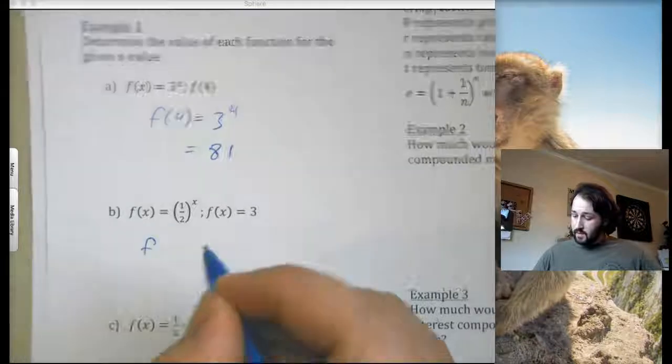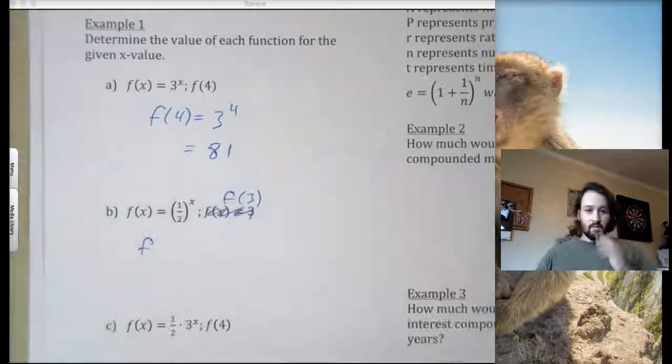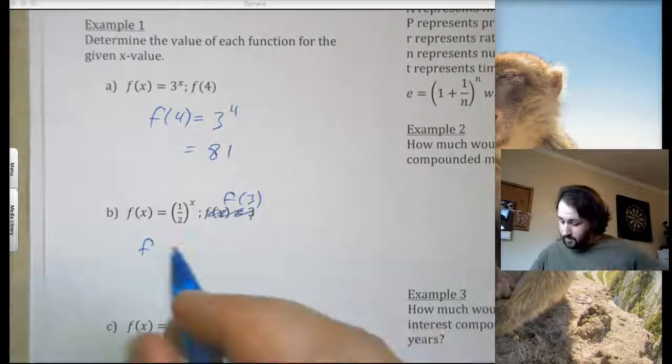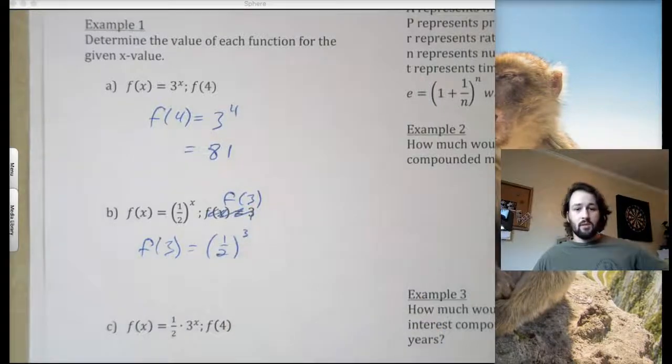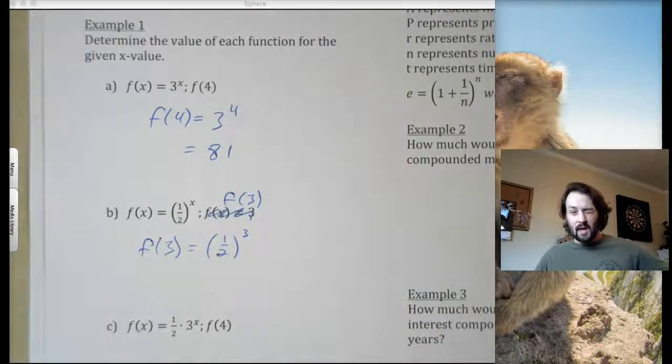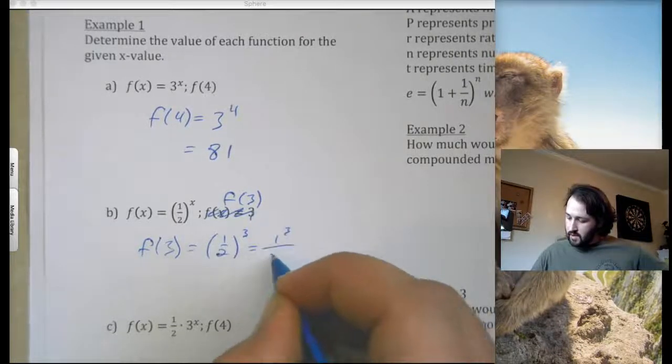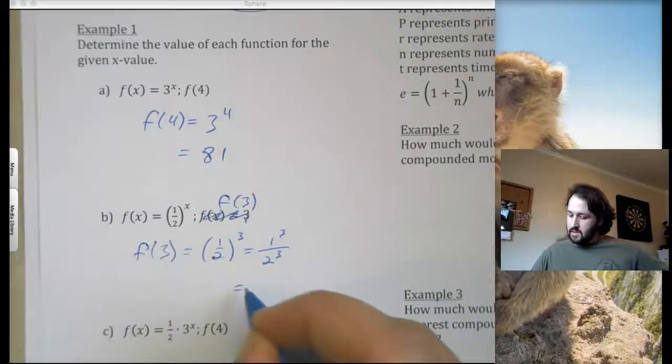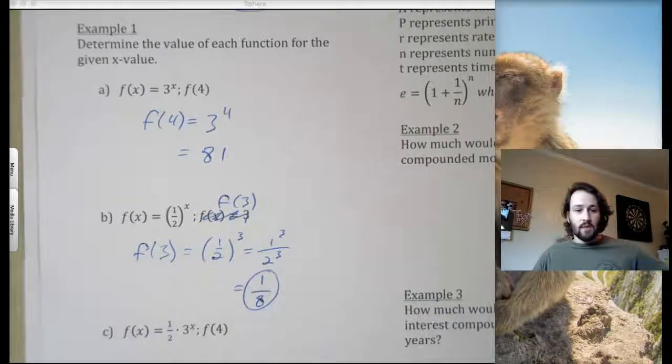Same sort of deal. Oh, I meant to say f of 3. I'm sorry. My bad. So f of 3 equals 1 half to the 3rd, which means 1 half times 1 half times 1 half, which is the same thing as 1 to the 3rd divided by 2 to the 3rd. 1 to the 3rd is 1. 2 to the 3rd is 8. So 1 over 8.